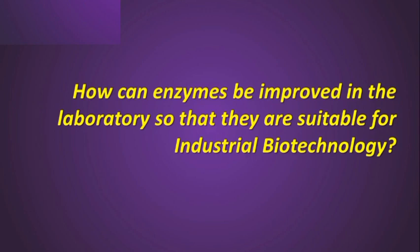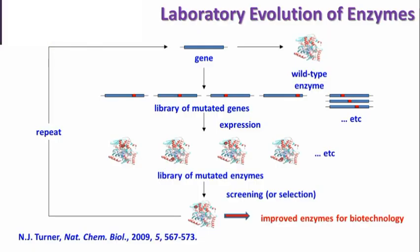So how can we link these ideas of natural selection and natural evolution to laboratory evolution, to produce enzymes that are better suited for industrial biotechnology? This slide shows the process of generating laboratory evolution of enzymes by essentially taking three types of technology and assembling them into a laboratory process.